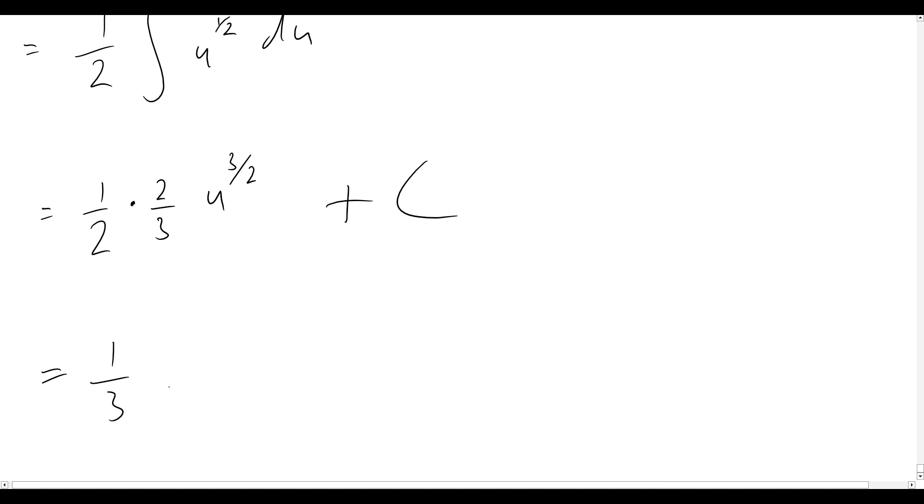The 2's will cancel out, and let's not forget u was equal to 1 plus sin squared x. So let's rewrite that now as 1 plus sin squared x, all to the power of 3 over 2, plus c, and that's it.